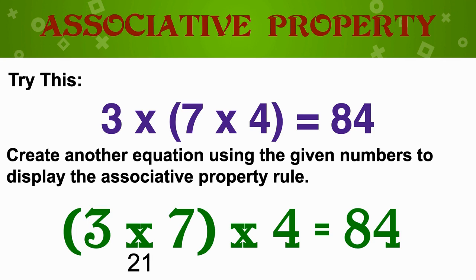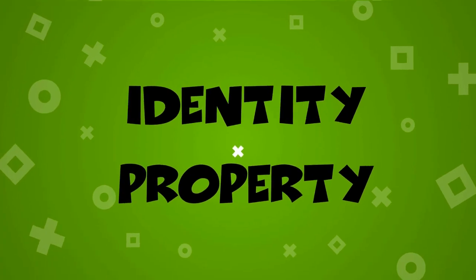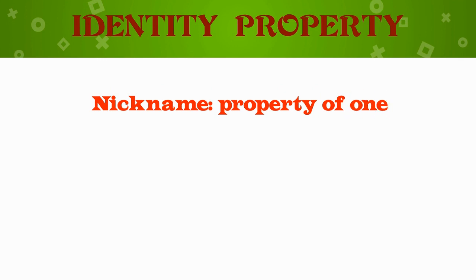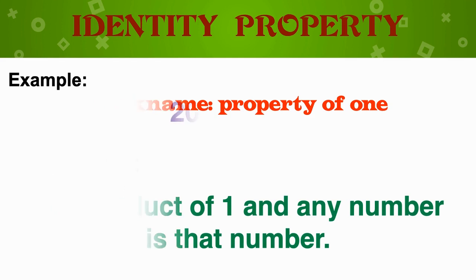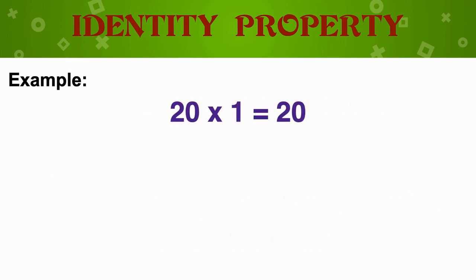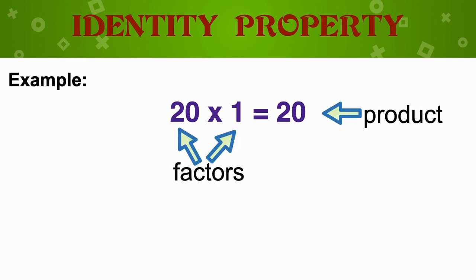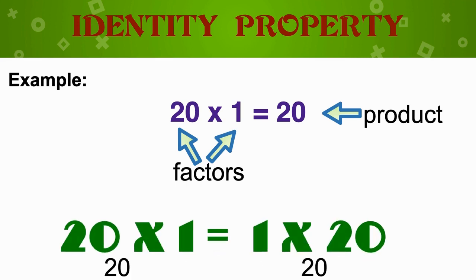Beautiful job! Let's look now at the identity property. The identity property, otherwise known as the property of 1, says that the product of 1 and any number is that number. Let's look at this example: 20 times 1 is equal to 20. Any number times 1 is equal to that number.